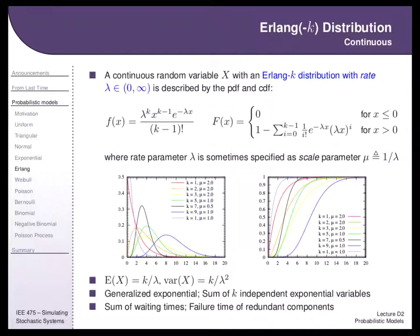From the exponential, a big question is: what happens when you add exponentials together? I mentioned failure time distributions. If you know a component is going to fail, what do you usually do to hedge against failure? Bring backup batteries — in the case of this class, a backup set of batteries for the laser pointer.